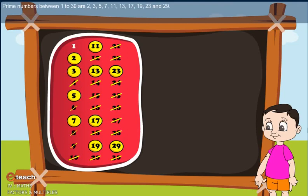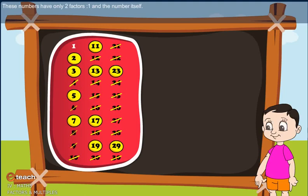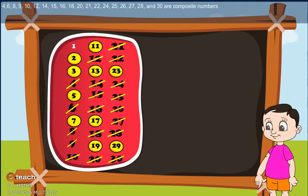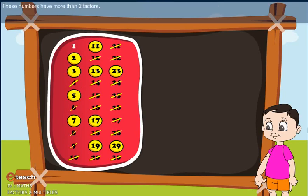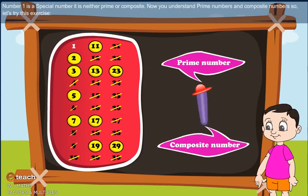Prime numbers between 1 and 30 are: 2, 3, 5, 7, 11, 13, 17, 19, 23, and 29. These numbers have only 2 factors — 1 and the number itself. The composite numbers between 1 and 30 are: 4, 6, 8, 9, 10, 12, 14, 15, 16, 18, 20, 21, 22, 24, 25, 26, 27, 28, and 30. These numbers have more than 2 factors. Number 1 is a special number — it is neither prime nor composite.